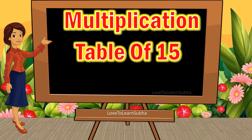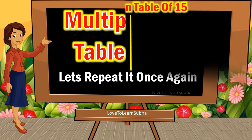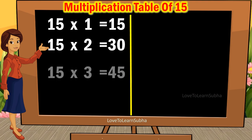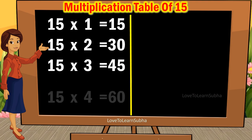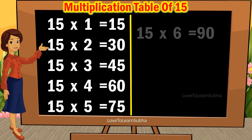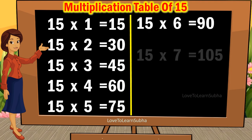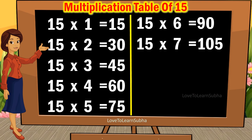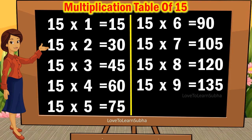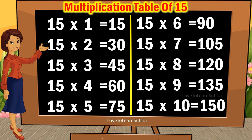Now let's repeat it once again. 15 ones are 15, 15 twos are 30, 15 threes are 45, 15 fours are 60, 15 fives are 75, 15 sixes are 90, 15 sevens are 105, 15 eights are 120, 15 nines are 135, 15 tens are 150.